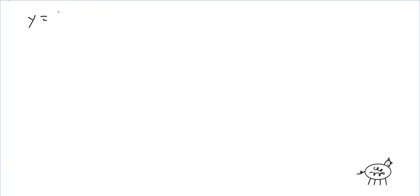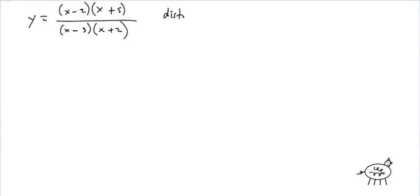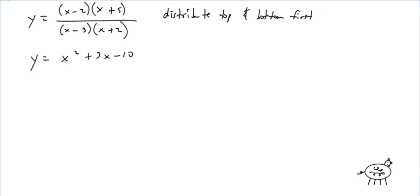Let's try another one with a bit more to it. y = [(x − 2)(x + 5)] / [(x − 3)(x + 2)]. I want to distribute top and bottom first. We'll learn the chain rule later in chapter 3b; for now, distributing avoids having to apply the product rule inside the quotient rule. So rewriting: y = (x² + 3x − 10) / (x² − x − 6).